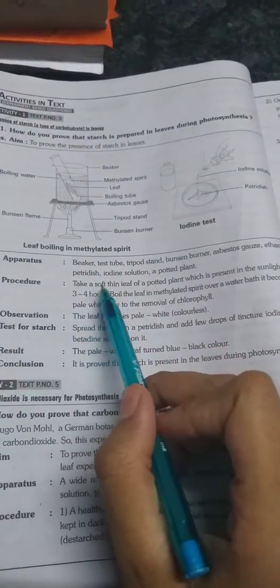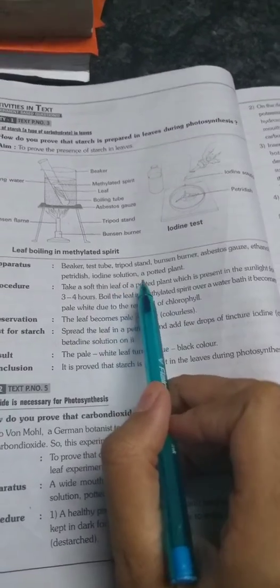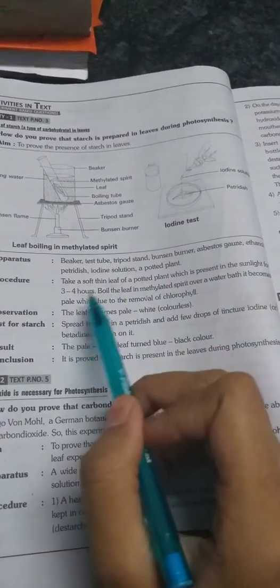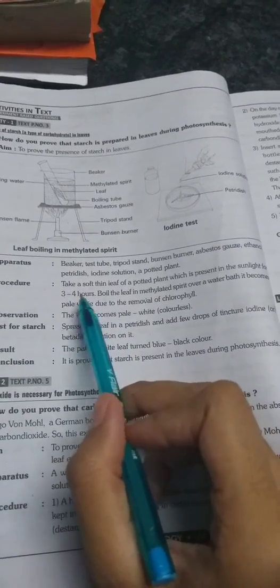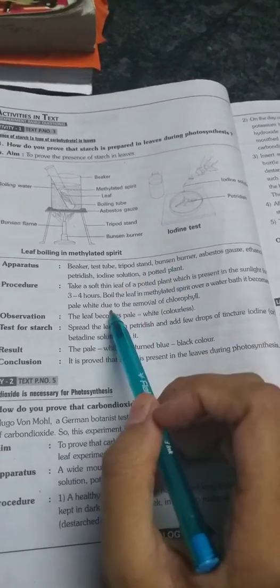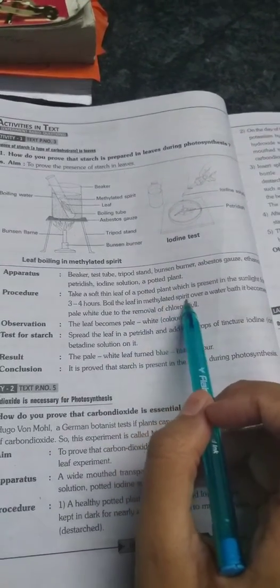So what is the procedure? We are taking a soft thin leaf of a potted plant which is present in the sunlight for three to four hours. A plant will keep in the sunlight for three to four hours. Then we'll take a thin leaf from that plant and we'll boil the leaf in methylated spirit.